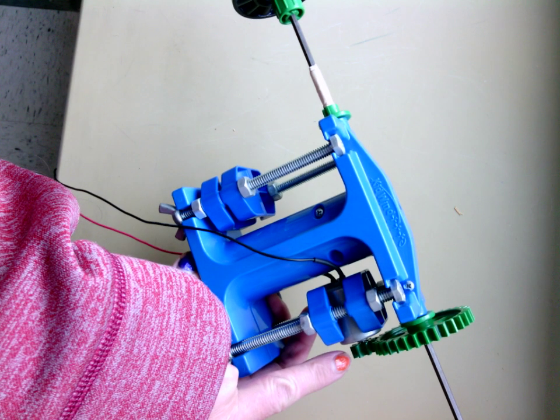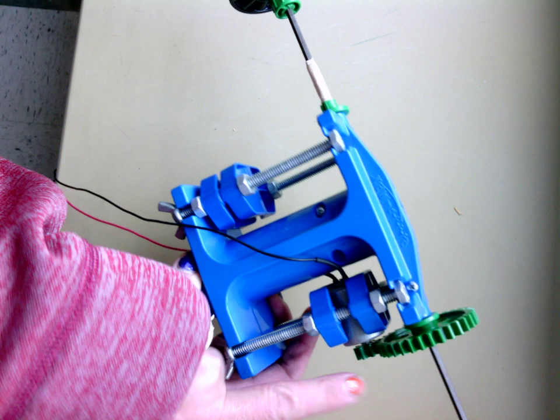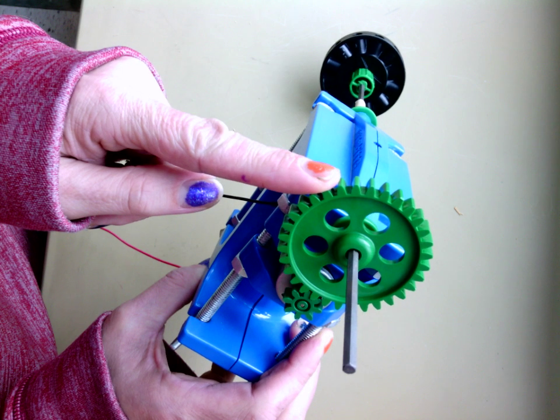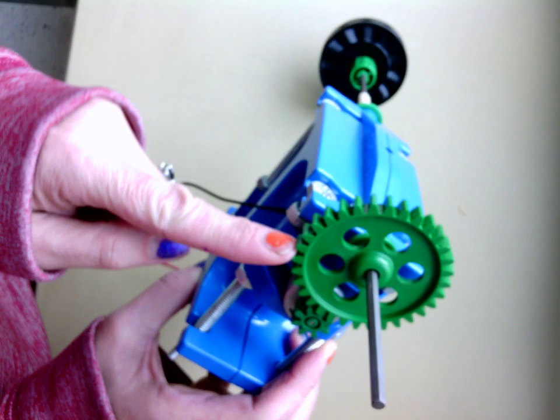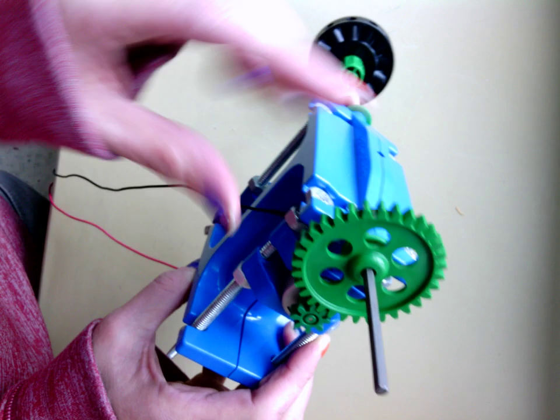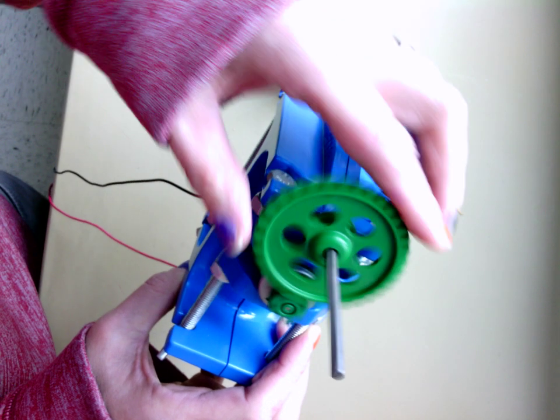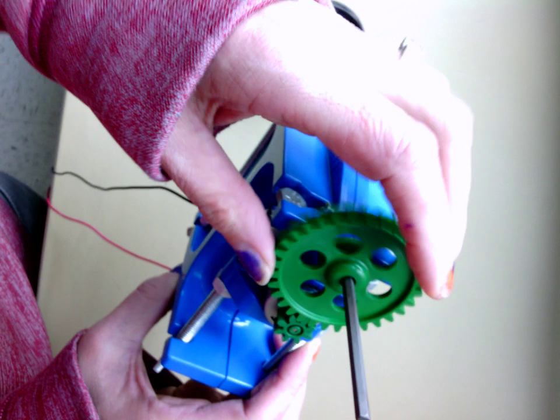The faster you get this one to go, the more electricity you're going to produce. So this is a small gear. It's easier to get to turn, but it doesn't generate as much electricity. The other thing I am testing here is to see how sticky that is.